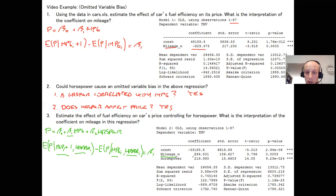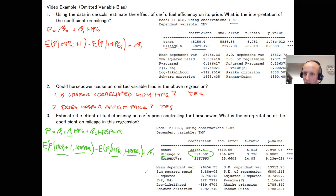What is the estimate of beta one? The estimate of beta one is a positive 594. So now we see that fuel efficiency is actually a good thing — it increases the price of a car.